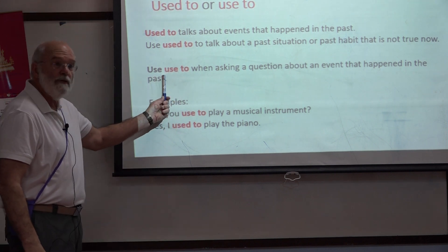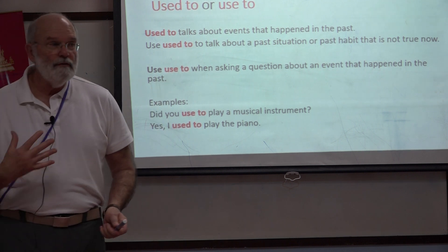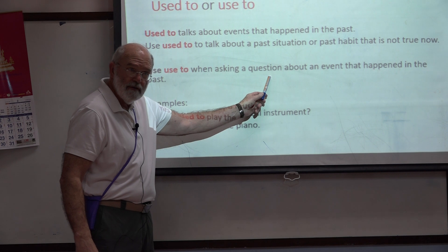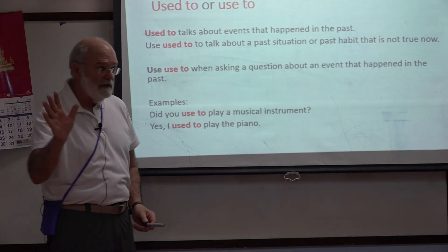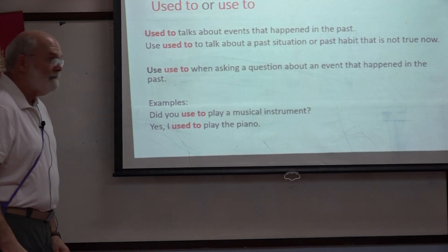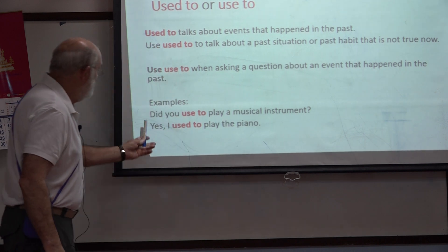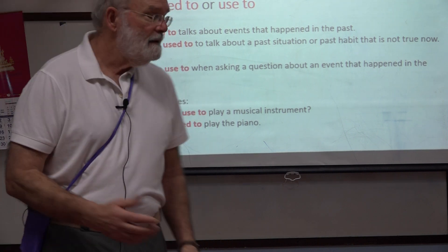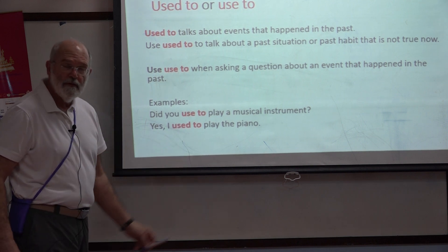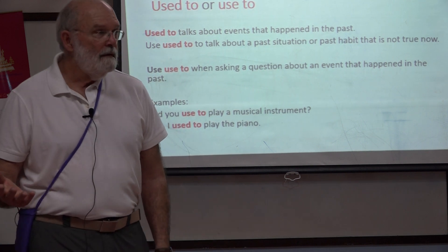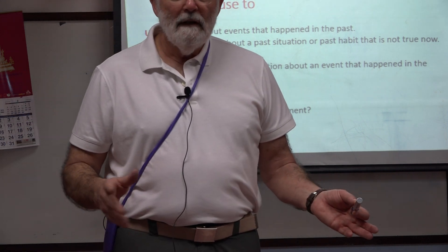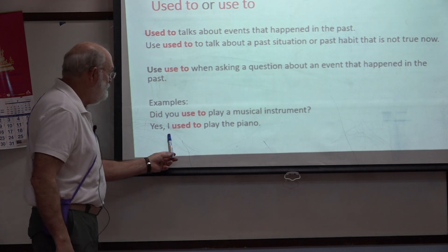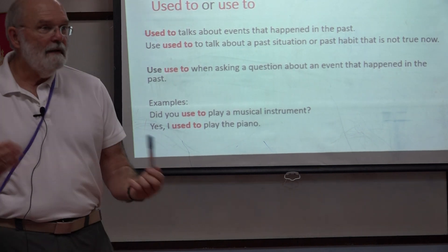You will also say just 'use to' — no D on the end of it. We use that instead when we are asking a question about something that happened in the past. For example: 'Did you use to play a musical instrument?' — that's a question. The answer: 'I used to play the piano.' So we say 'use to' only if it's in a question, and 'used to' when making a statement about something that happened in the past.